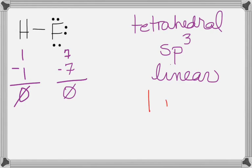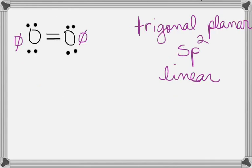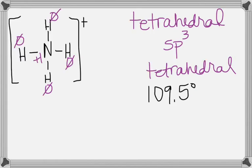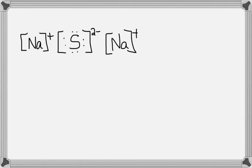HF has one sigma bond — it only has a single bond, so it's one sigma. I'm not going to write zero pi because if I don't write anything about pi, it's understood that there's zero. O2 is a double bond: one sigma, one pi. Carbon monoxide is a triple bond, so it's one sigma and two pi. The ammonium ion has four single bonds, so it has four sigma. We don't have to worry about sodium sulfide.